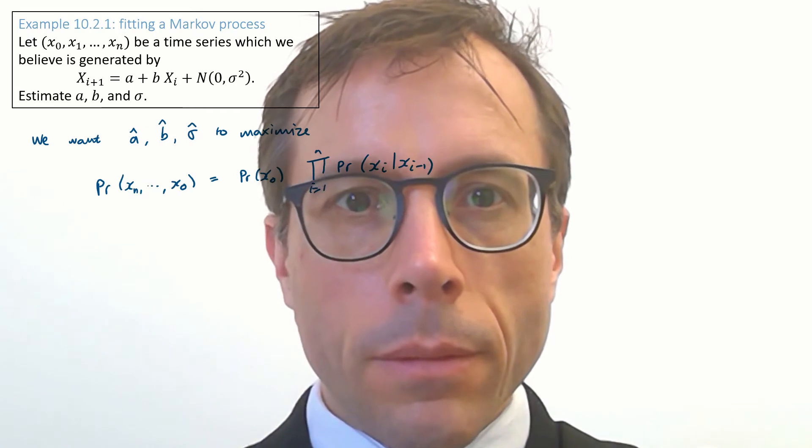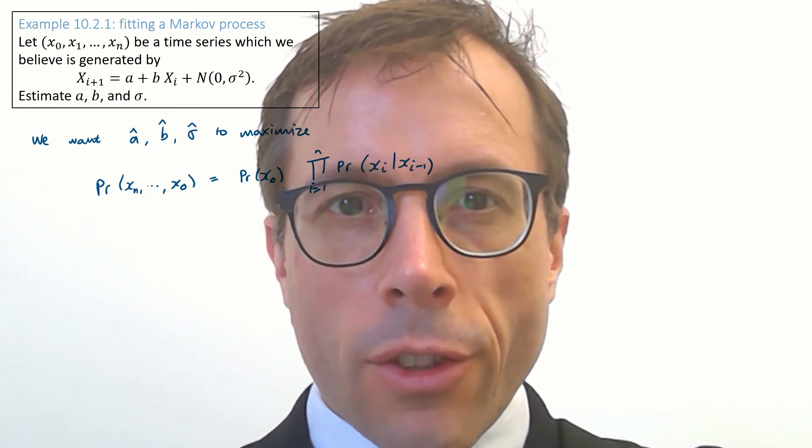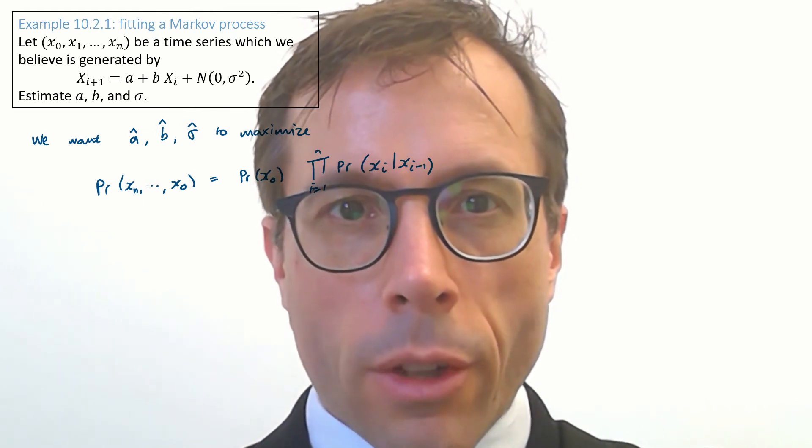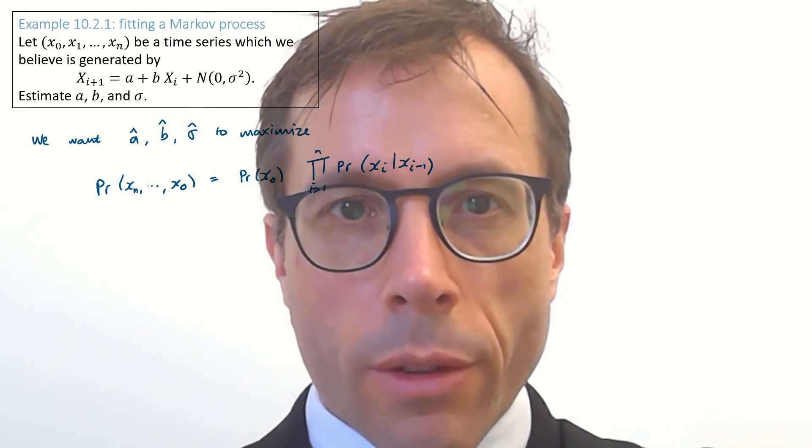Let's go back to our example from the beginning of the video. And let's write out the full likelihood of the data set. We can estimate the unknown parameters a, b and sigma by picking them to maximise the likelihood. And we've just worked out the form of likelihood.